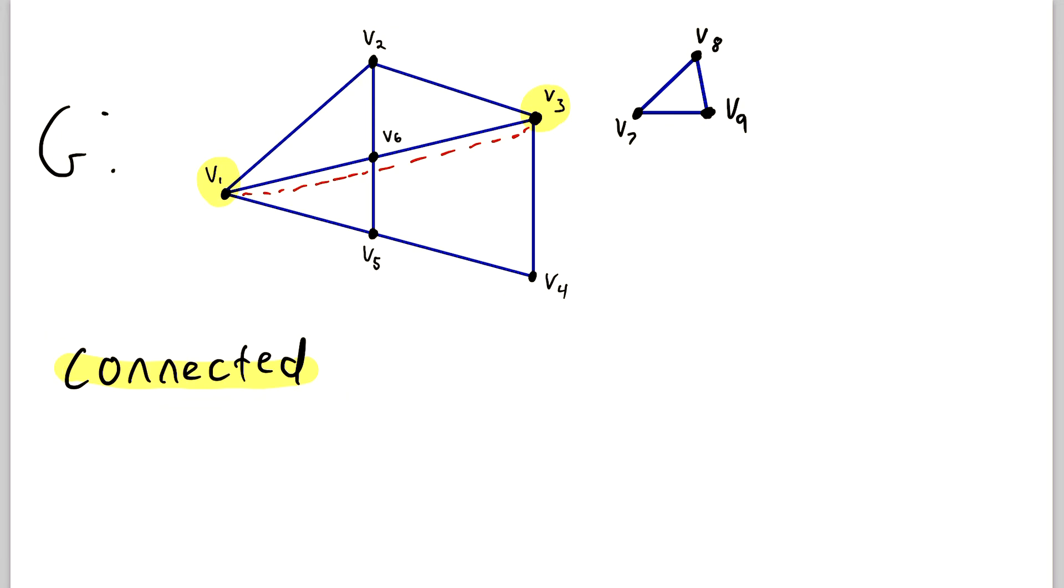But then if we look at a different pair of vertices, let's say v5 and v9, these vertices are not connected because there does not exist a path that connects them in this graph. Indeed, the only vertices that v9 is connected to are v7 and v8. It also happens to be adjacent to those, which is certainly sufficient for them to be connected.